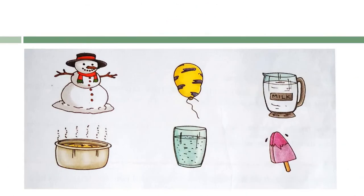Look at this picture carefully. Here you will find all the three states of matter. In this picture, ice cream represents the solid state, milk and water represent the liquid state, and air filled in a balloon and water vapor represent the gaseous state.